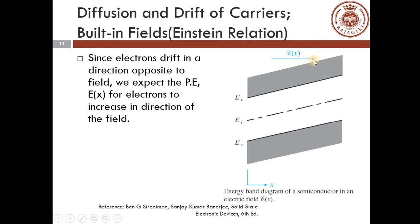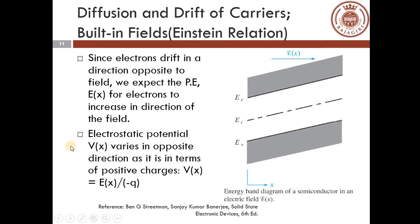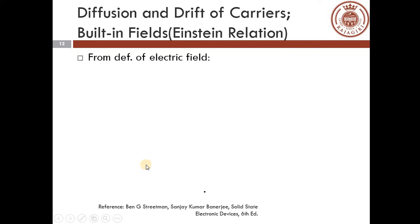When an electric field is applied in the positive x direction, electrons drift opposite to the field, so the potential energy E(x) for electrons increases in the direction of the electric field. The electrostatic potential V(x) varies in the opposite direction since it is defined in terms of positive charges: V(x) = E(x) / (−q). From the definition of electric field: ε(x) = −dV(x)/dx.